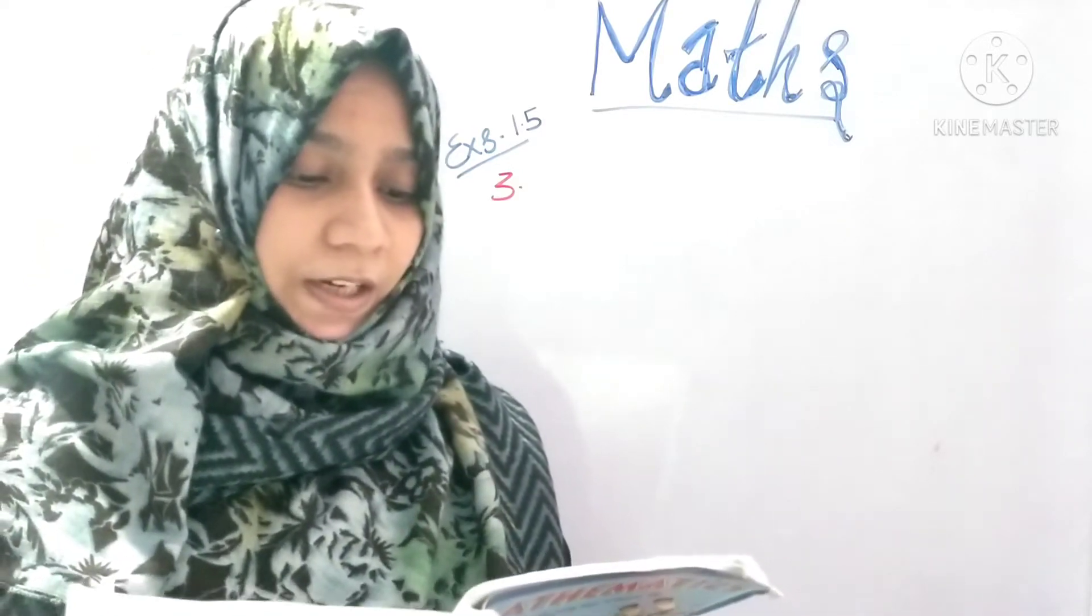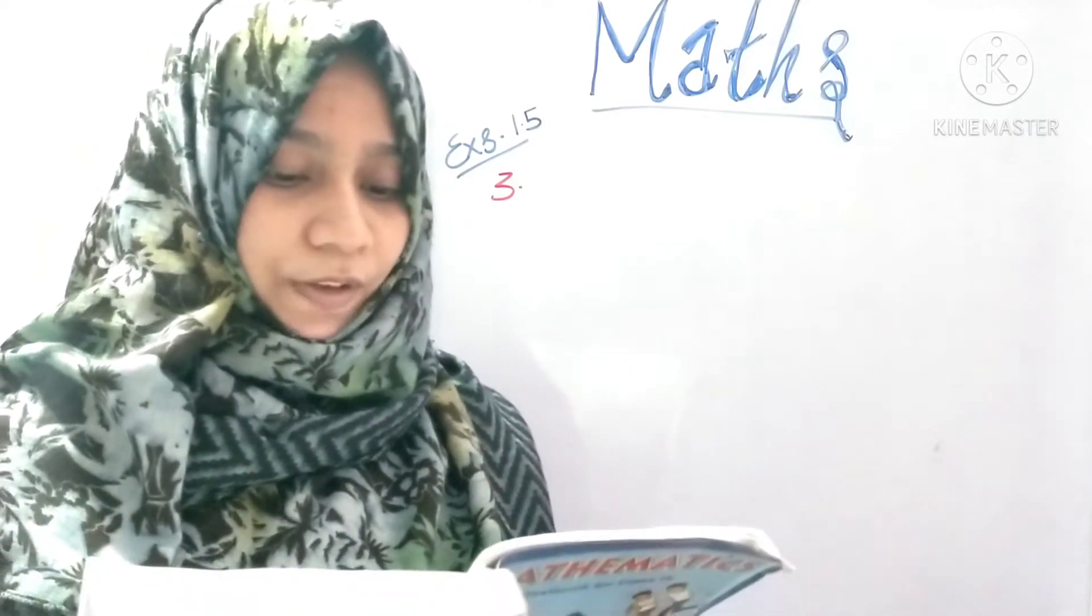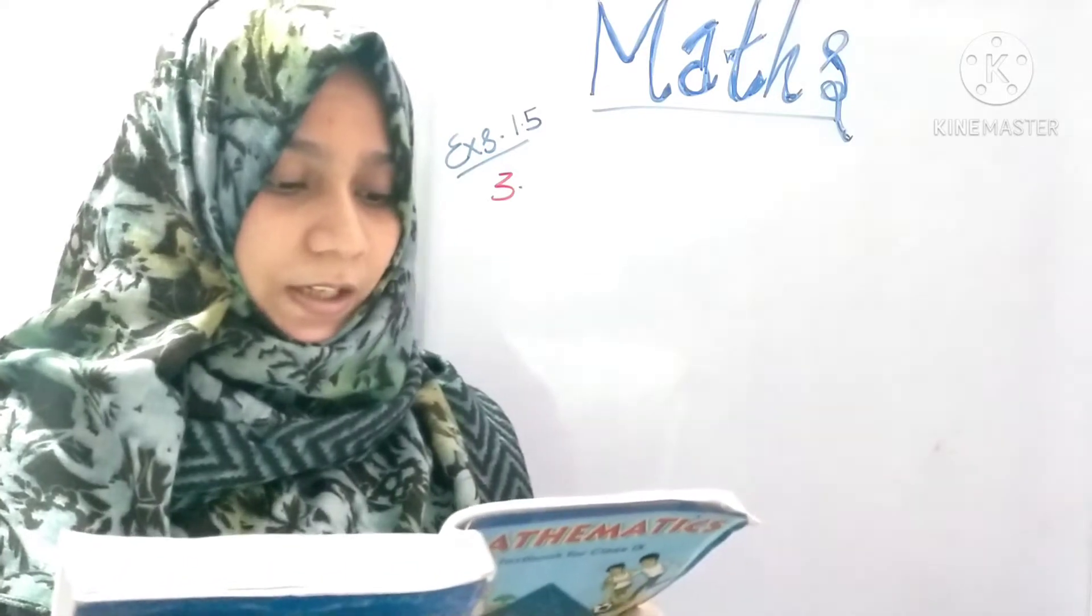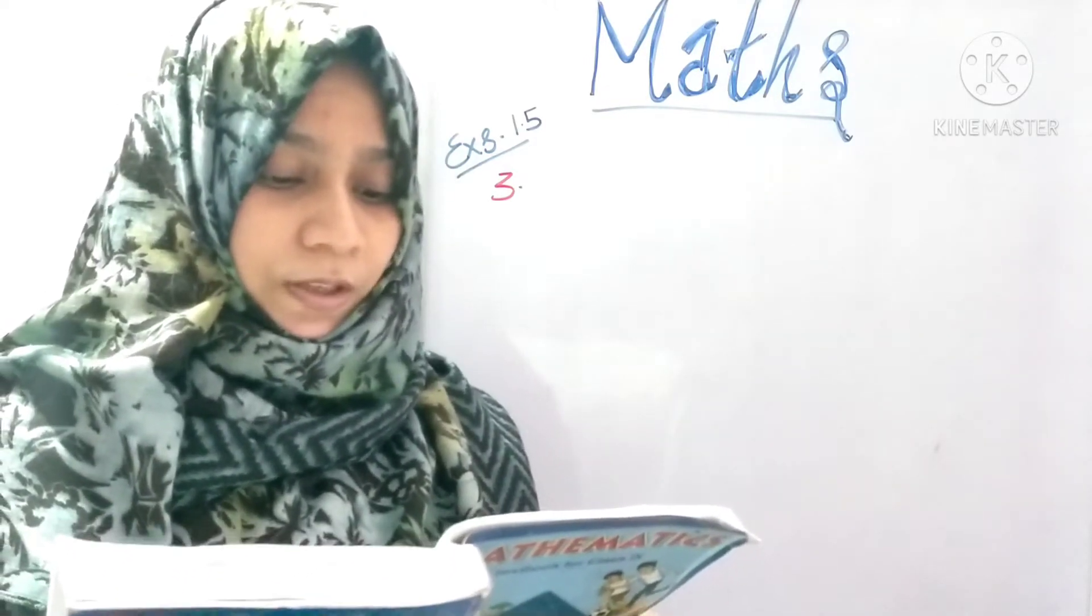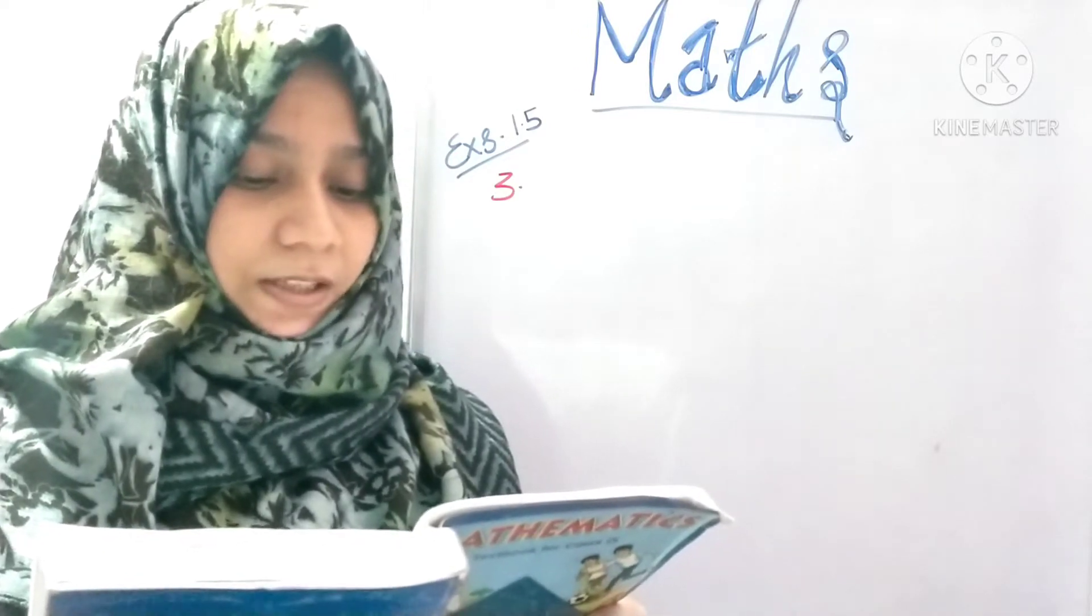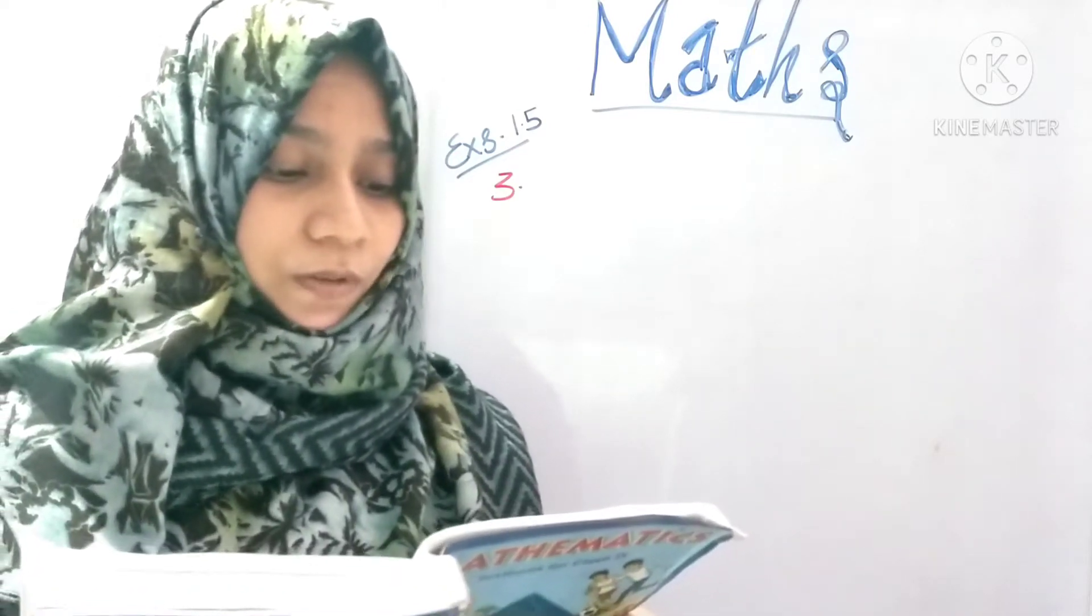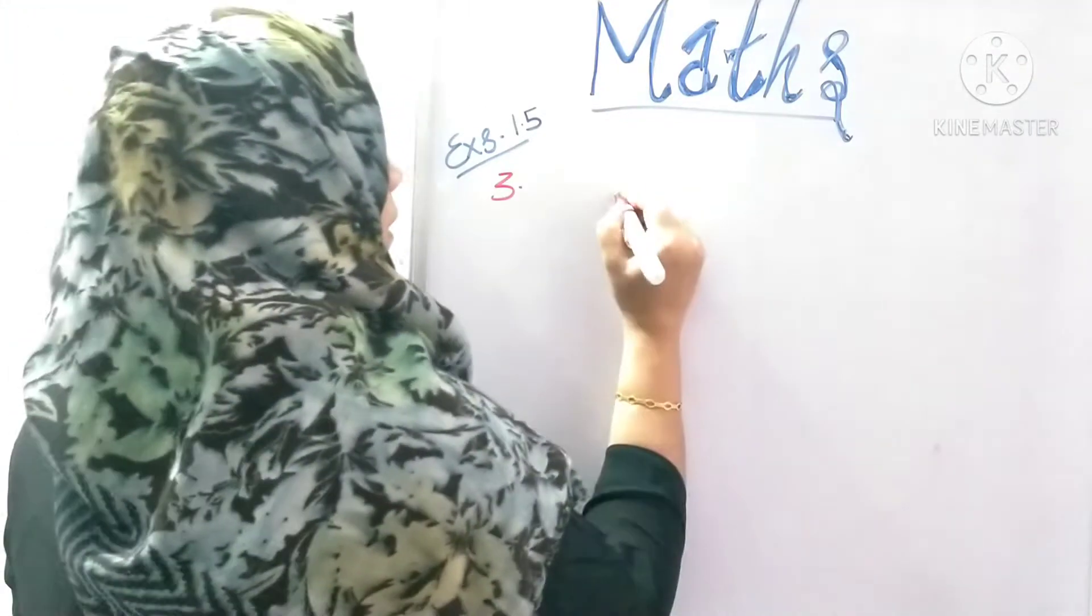Recall, pi is defined as the ratio of circumference of a circle to its diameter d. That is, pi is equal to C by d. This seems to contradict the fact that pi is irrational. How will you resolve this contradiction?